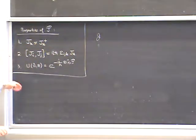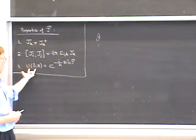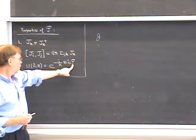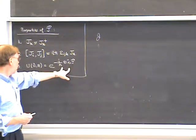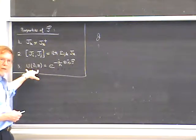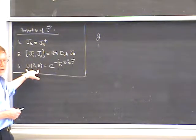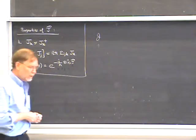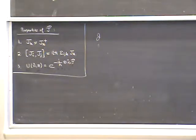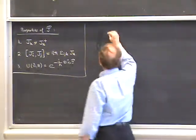In terms of strategy for finding unitary rotation operators, we've simplified the problem considerably. Instead of finding an arbitrary U depending on three continuous parameters, we only need to find a three-vector of Hermitian operators satisfying the angular momentum commutation relations. Then we form the exponential to get operators reproducing the classical multiplication law of rotations. I'll now carry out this strategy in the simplest possible system: the spin-one-half system.